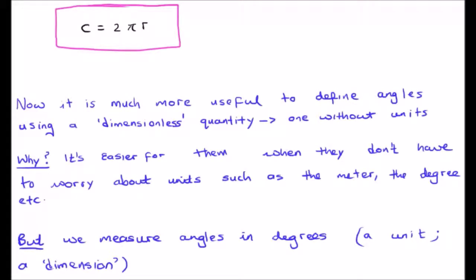From this simple expression that the circumference is equal to twice pi times the radius, we are very easily able to extend or move on to the concept of radians. It's much more useful to define angles using what's known as a dimensionless quantity, which means it is one without units.